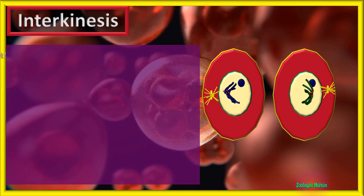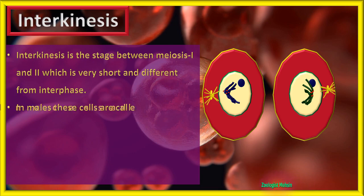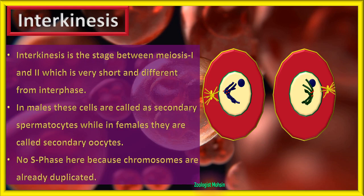The next phase is interkinesis — the stage between meiosis 1 and meiosis 2, which is very short and different from interphase. In males, these cells are called secondary spermatocytes, while in females they are called secondary oocytes. There is no S phase here because chromosomes are already duplicated and do not need to be replicated again.